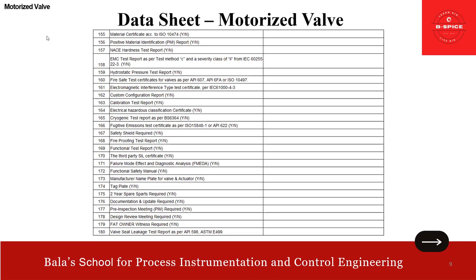Additional special requirements include: electrical hazardous classification certificate, cryogenic test report, fugitive emission test certificate, safety shield requirement, fireproofing test report, functional test report, third-party SIL certificate, failure mode effect and diagnostic analysis, functional safety manual, manufacturer nameplate for valve and actuator, tag plate, two-year spare parts, documentation and updates, pre-inspection meeting, design review meeting, FAT (factory acceptance test), owner witness requirement, and valve seat leakage test report. These are special requirements based on applicability.